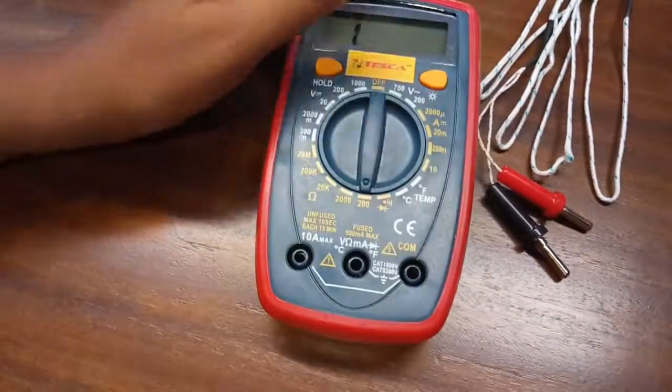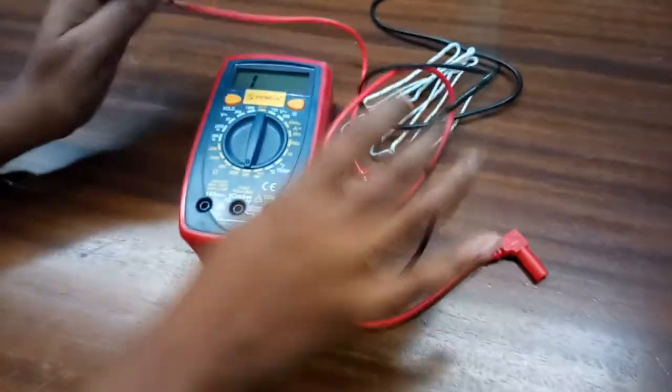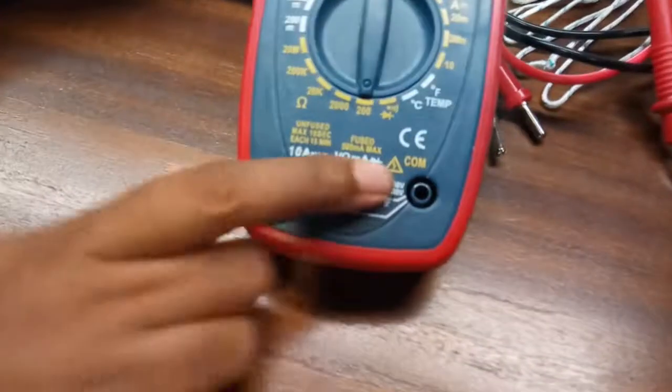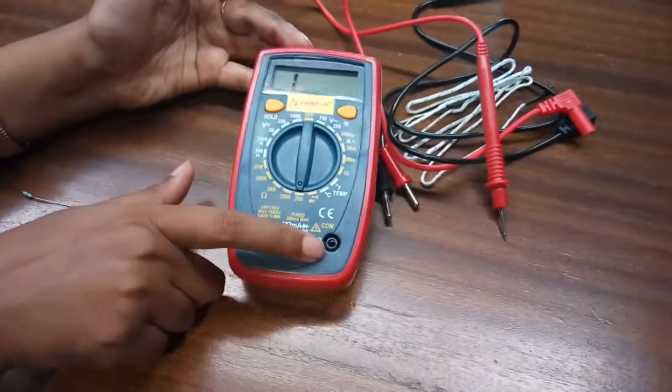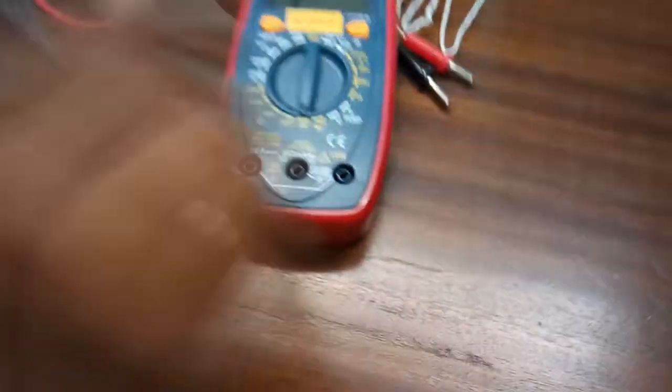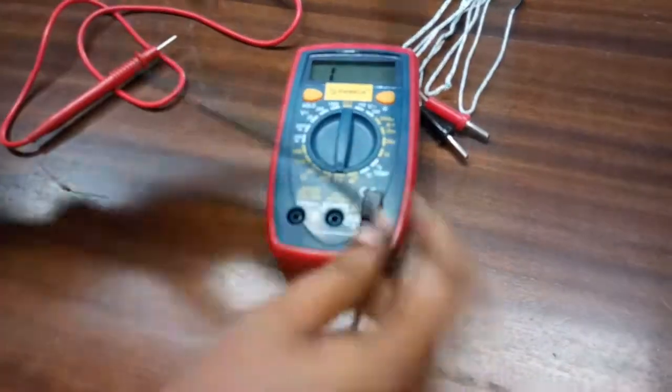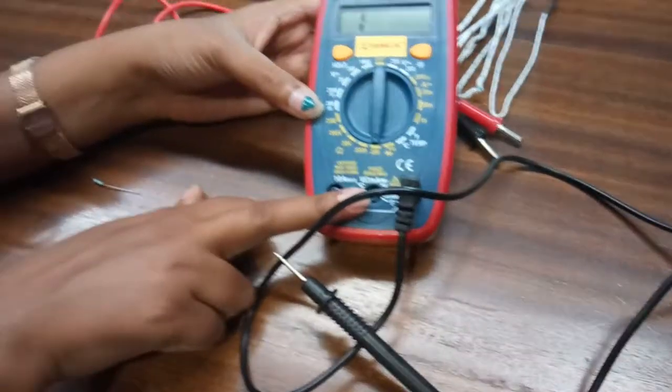Now with this multimeter comes this testing probe. So here this portion, this is written common, here this terminal denoted by com common, this is ground terminal. For this, use this black testing probe just for better understanding and this is the positive terminal.